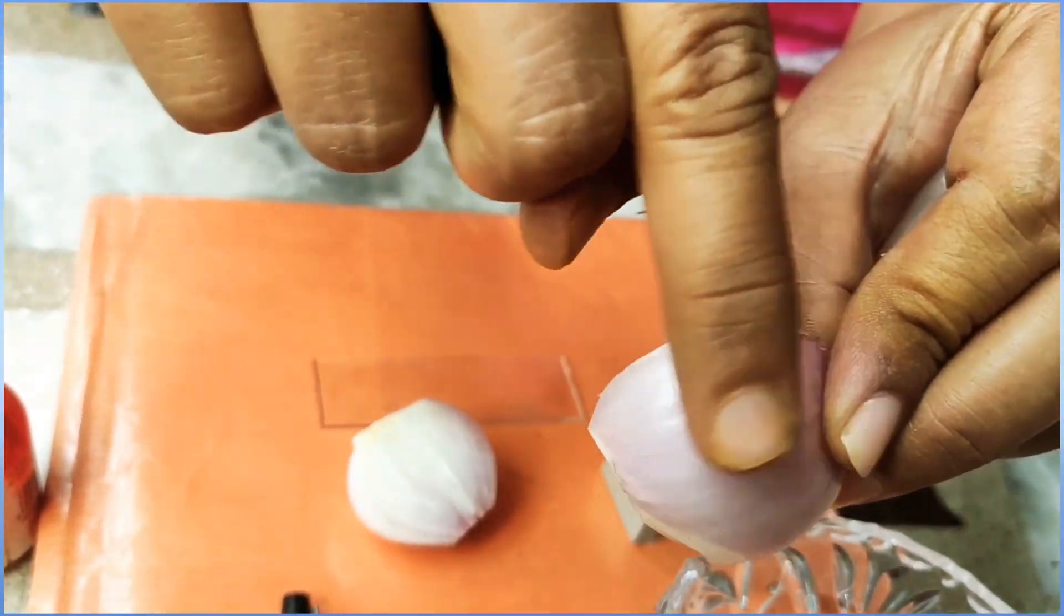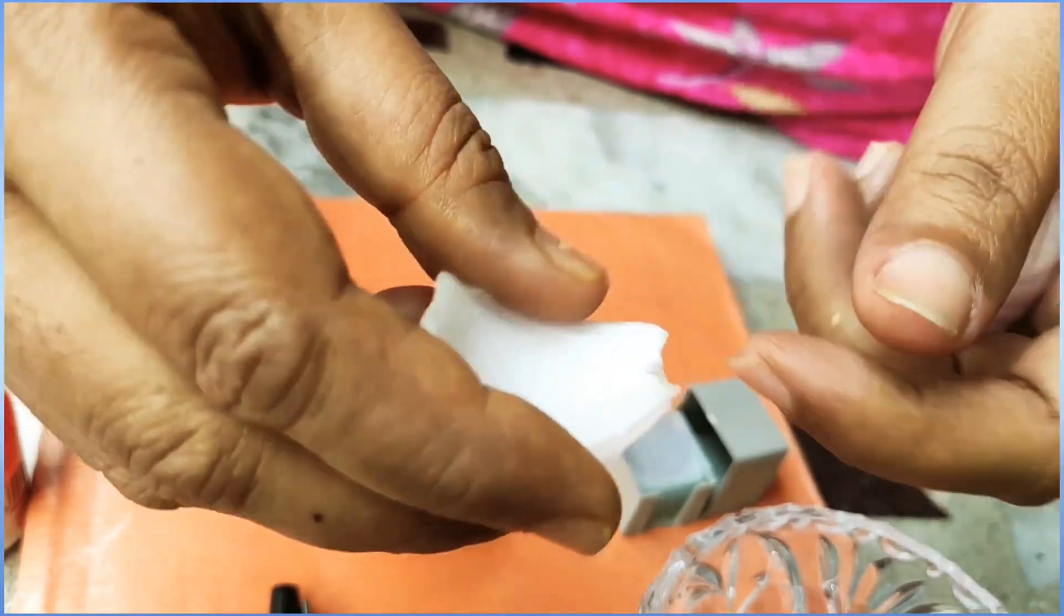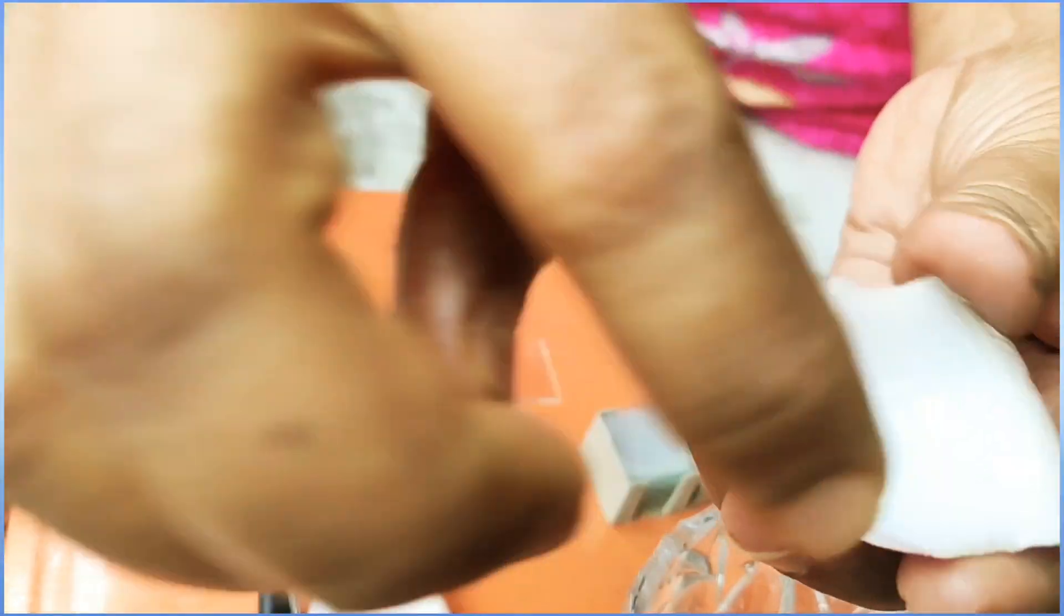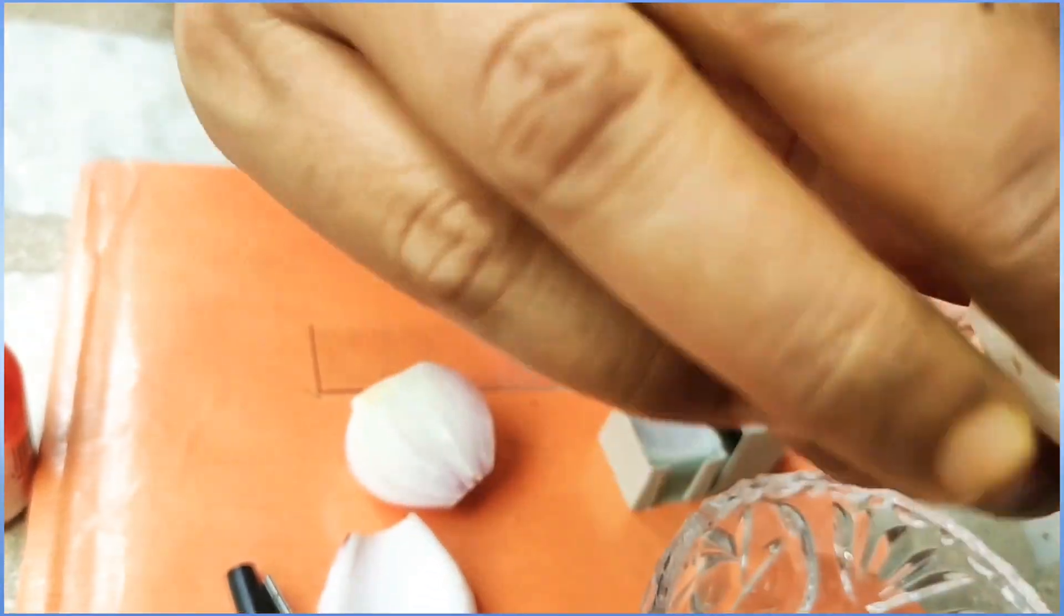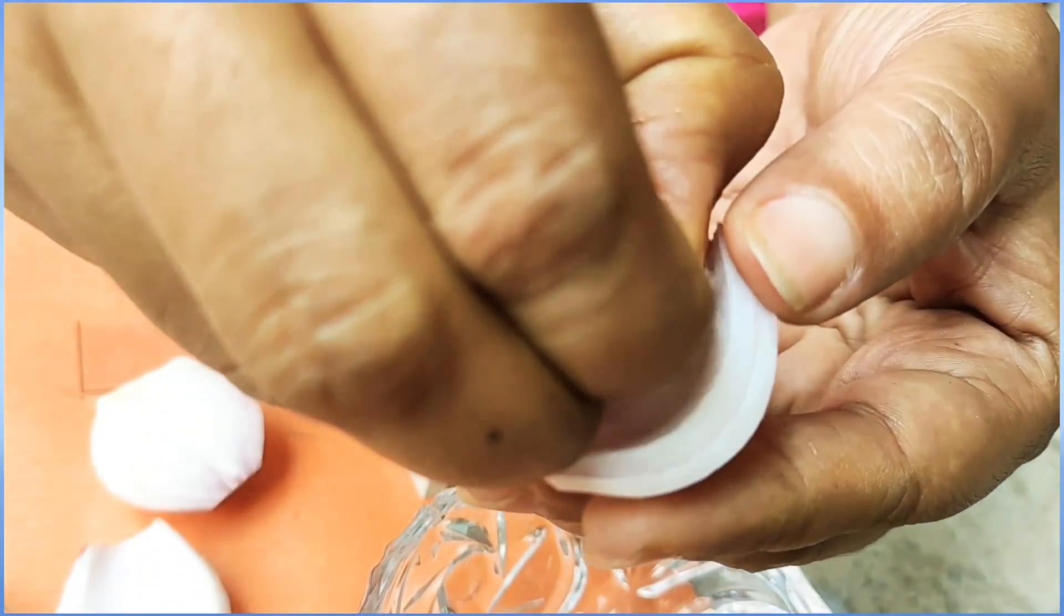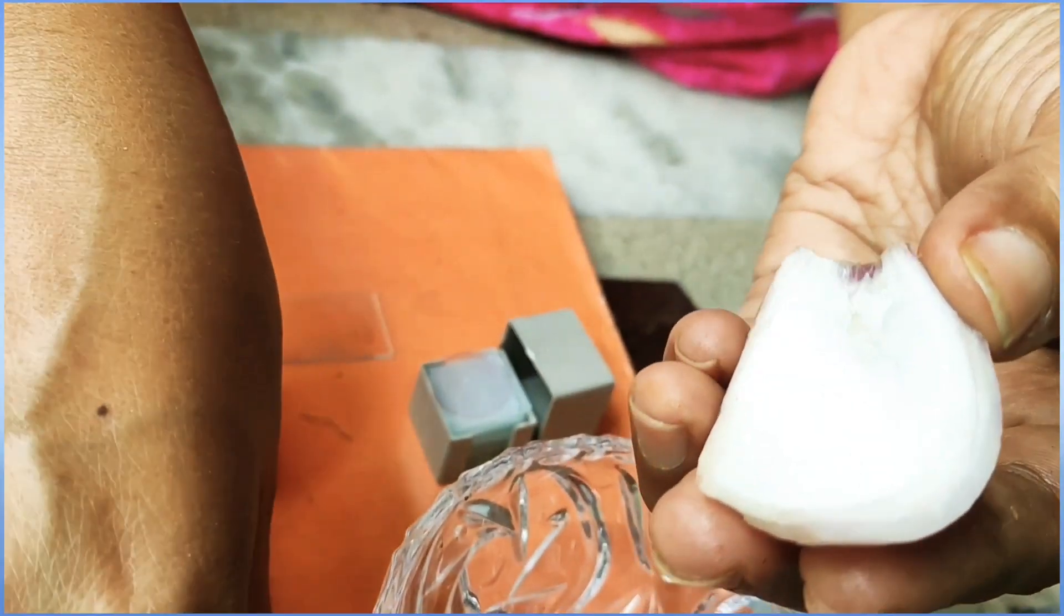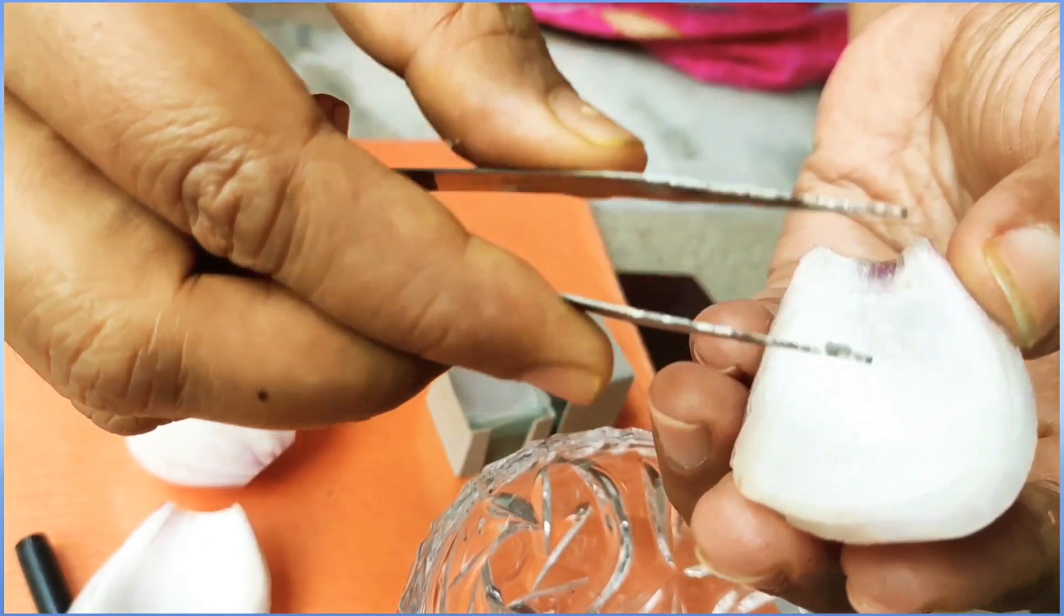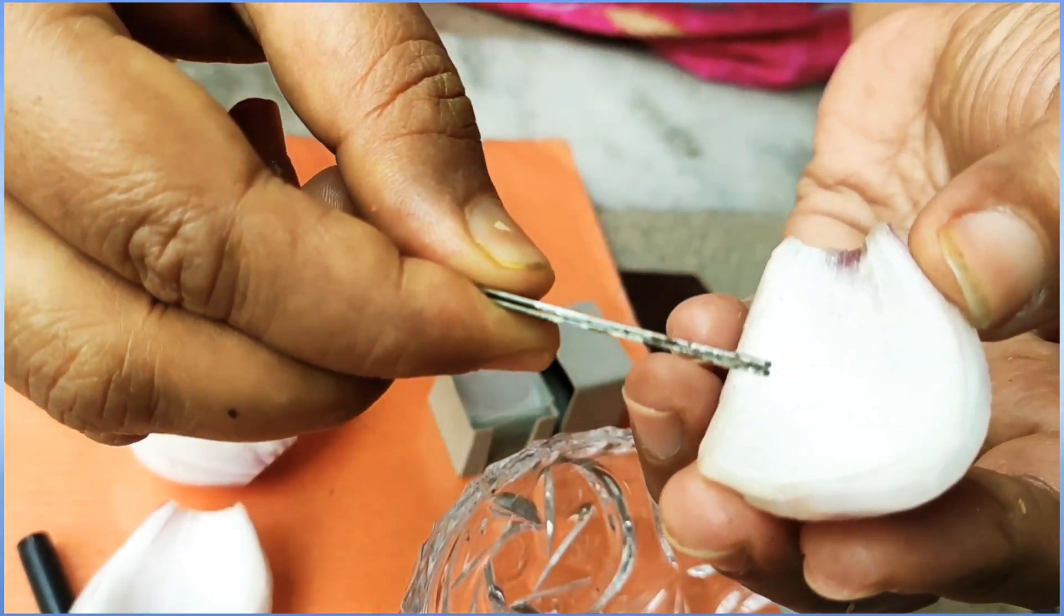This is the convex surface of the onion and this is the concave surface. So what you need to do is that you have to take out from this inner surface, that is the concave surface, with the help of your nail you can just take out the peel. And if it is not coming out, then you can use this forceps and just catch the peel with the help of the forceps and just pull it.